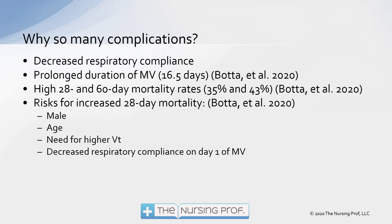There's a high 28 and 60 day mortality rate: 35% at 28 days and 43% at 60 days. Now these numbers are coming down as we're learning more and learning how to better care for COVID-19 patients. Risks for 28-day mortality include being male, older age, need for a higher tidal volume, and decreased respiratory compliance on day one of mechanical ventilation. The worse the compliance is on day one, the greater the chance that the patient is not going to make it past 28 days.